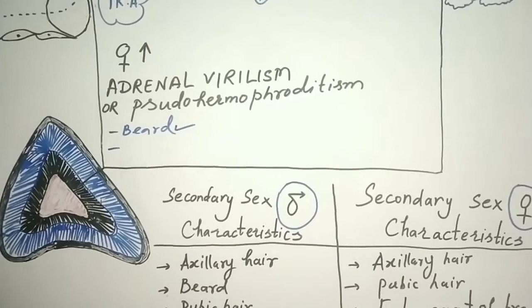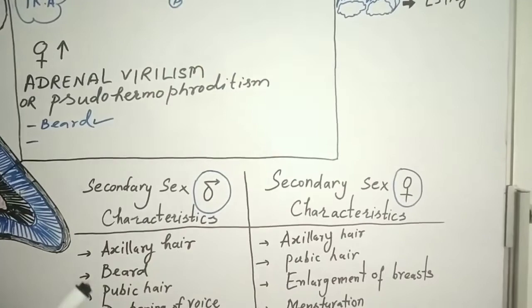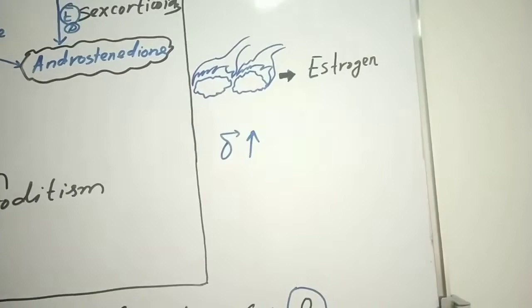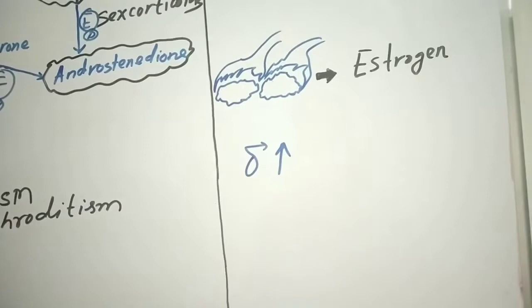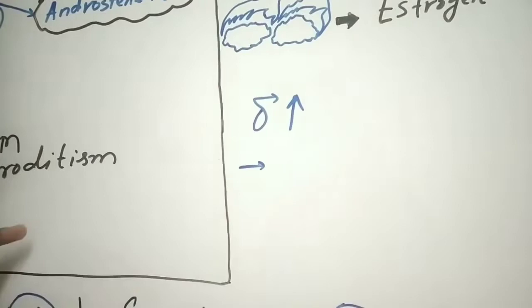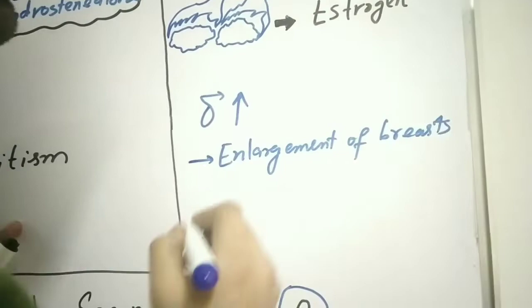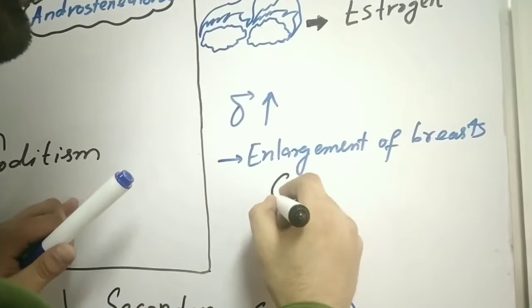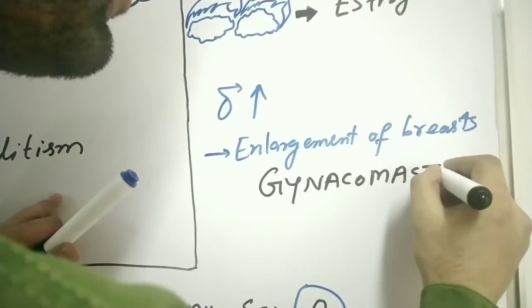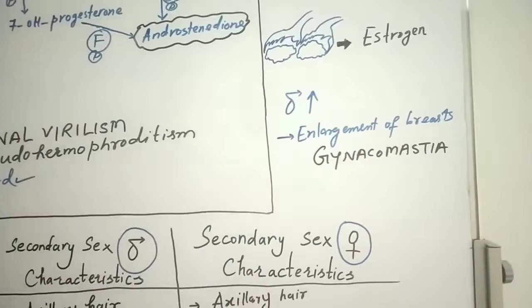If there is hypersecretion of sex corticoids in males, these males will develop female-like secondary sexual characteristics. For example, there will be enlargement of the breasts in males, which is known as gynecomastia. They will also develop increased pubic hair and other female secondary sexual characteristics.